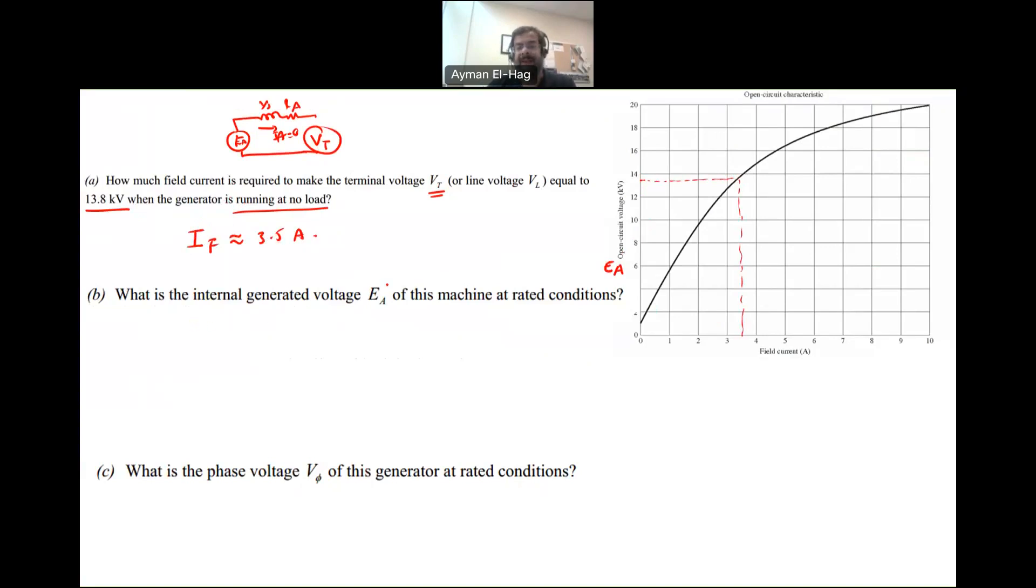Part B: What is the internal voltage at rated conditions? When we say rated condition, the generator is delivering the rated power, which is 50 MVA. Using the model, your Ea using KVL is equal to Vt plus Ia Ra plus Ia times jXs. Ia is not zero because we have rated conditions.